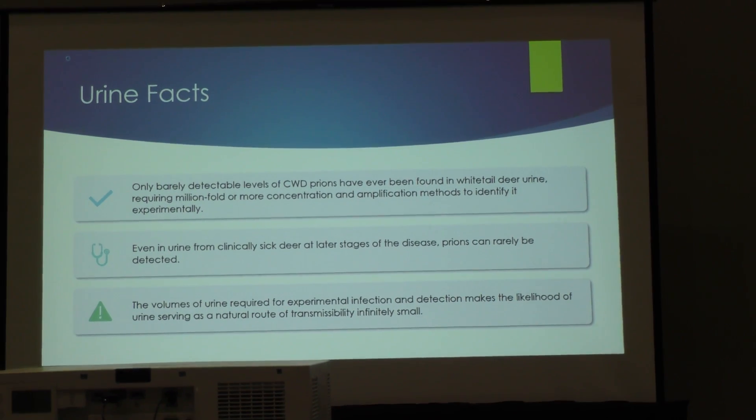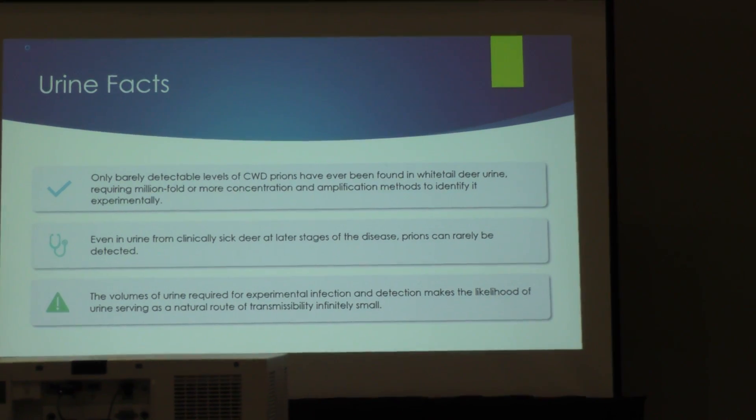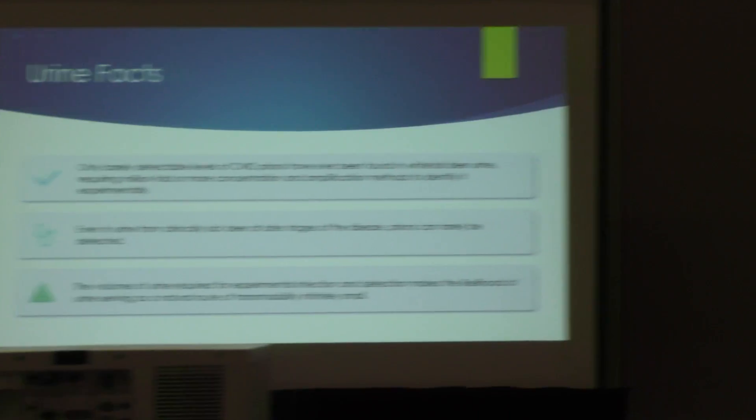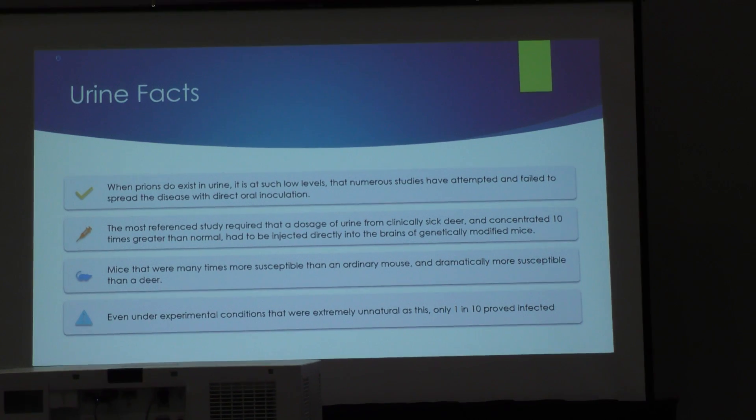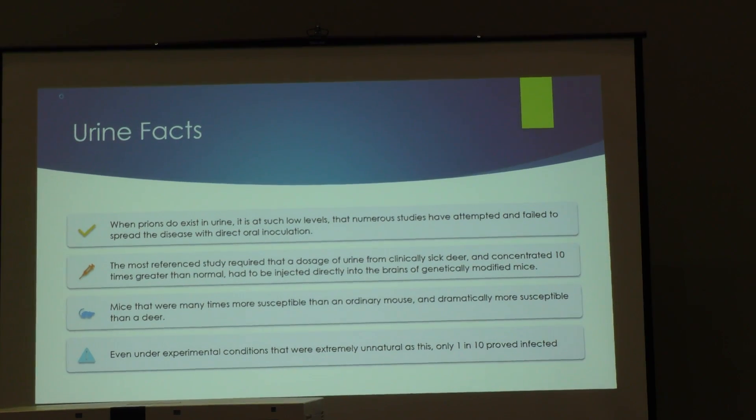Nick Haley took urine from CWD-positive deer and concentrated it tenfold to see if he could initiate an infection even under those unnatural circumstances. He then took that concentrated urine, resuspended it in a different solution, and injected 30 microliters directly into the brains of transgenic mice. These mice are specifically engineered to get CWD — they express the deer prion protein and are engineered to express more of it so they get sick faster, making them like a little tinderbox for CWD.